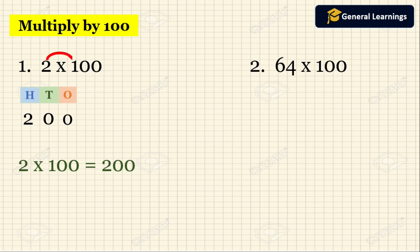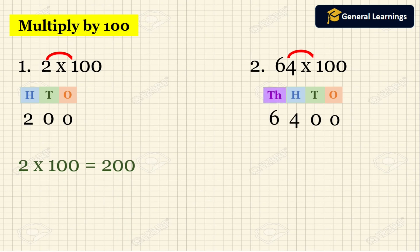Now we will see another example. They have given 64 into 100. Since 100 is a three-digit number, the place value will be ones, tens, hundreds. Now 100 has two zeros — those two zeros should be written in the ones and tens place at the extreme end. Next multiply the remaining number by 1: 64 into 1 we get 64. So 4 should be written in the hundreds place and 6 should be written in the thousands place. So the answer will be 64 into 100 equal to 6400.